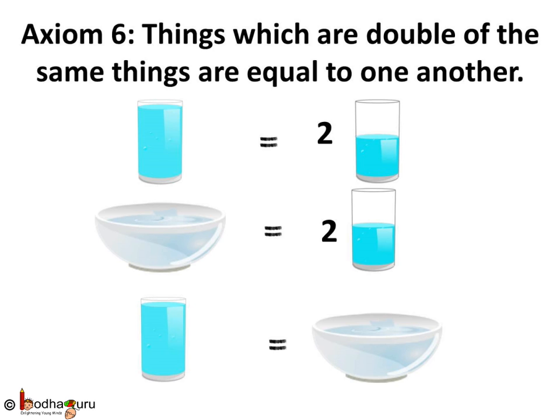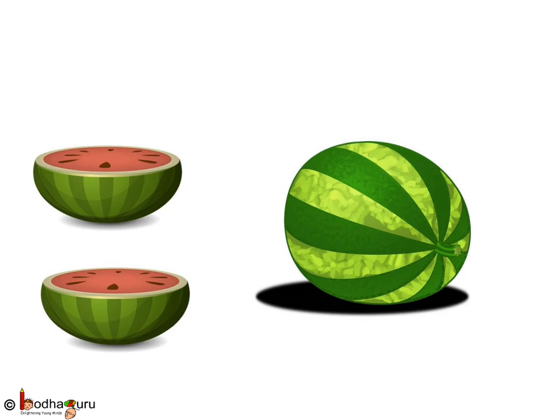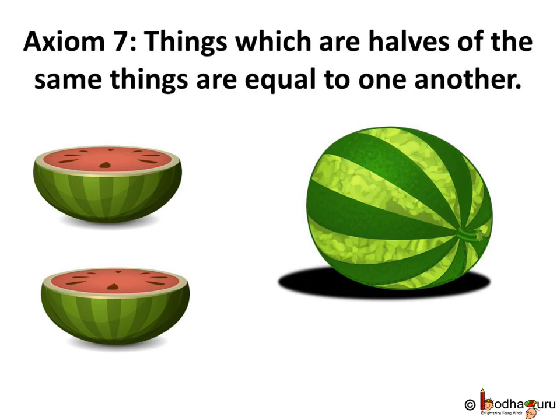Things which are double of the same things are equal to one another. Let's cut a watermelon into two halves. What can you say? Well, the two halves are equal to one another.